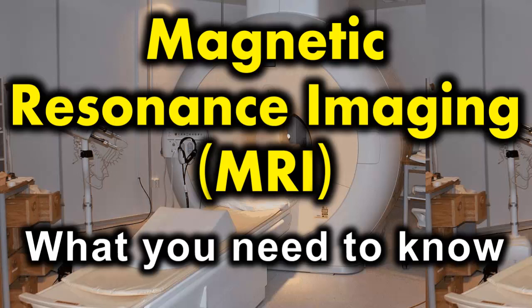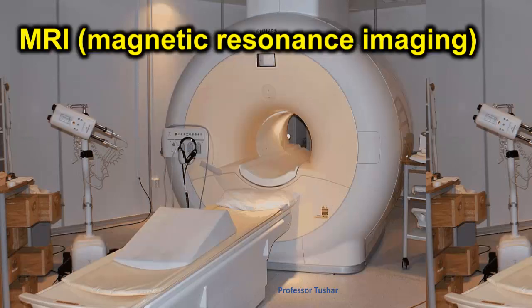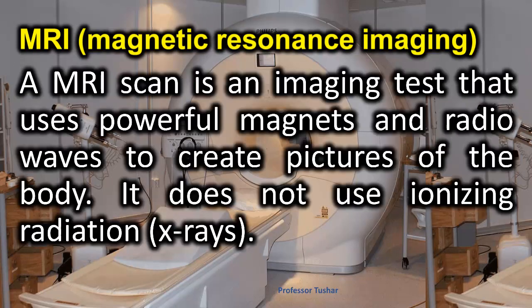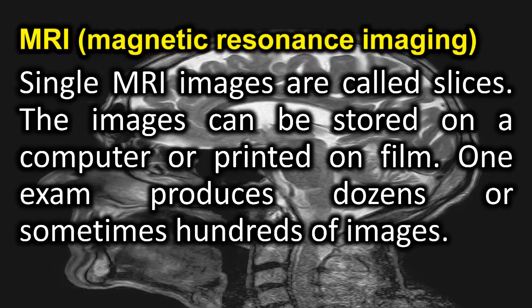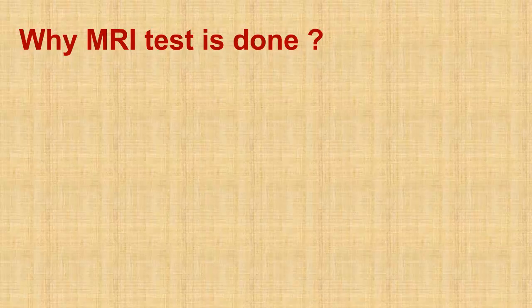Magnetic Resonance Imaging — MRI: What You Need to Know. An MRI scan is an imaging test that uses powerful magnets and radio waves to create pictures of the body. It does not use ionizing radiation or x-rays. Single MRI images are called slices. The images can be stored on a computer or printed on film. One exam produces dozens or sometimes hundreds of images.